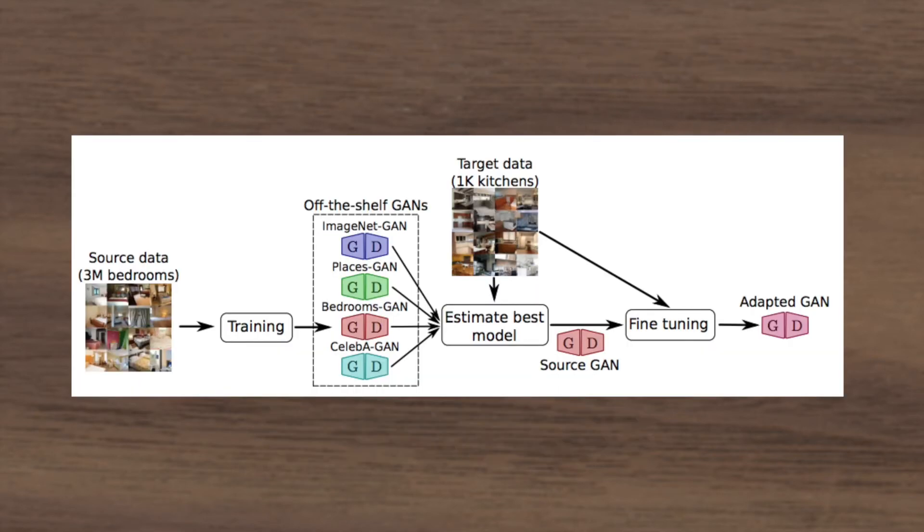From a high-level overview, this is the idea: you have the source domain which is the original dataset such as ImageNet that you train on, and then you transfer this model into some new target. So in the context of GANs, this means it starts out generating ImageNet images and then it will transfer.